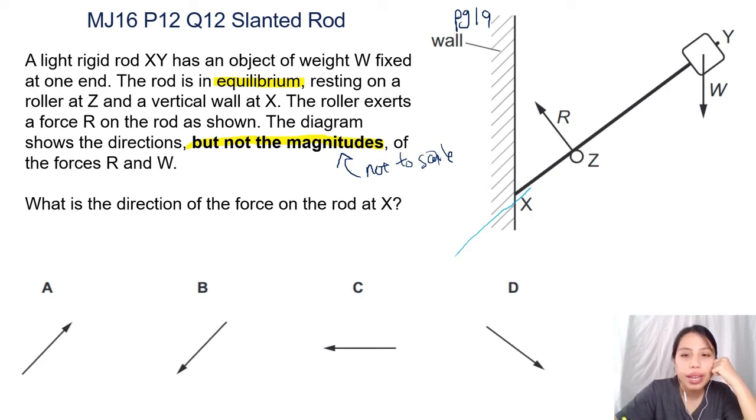So it should be somewhere here - all these directions will cause an anticlockwise moment. Means A is out, B possible, C is definitely out.